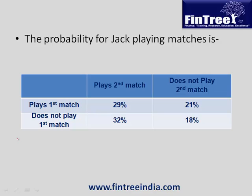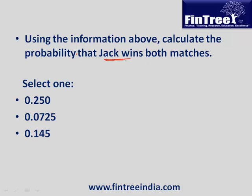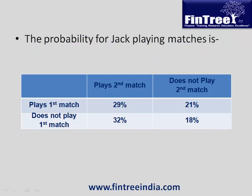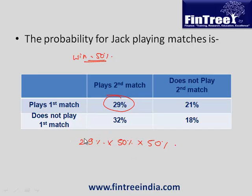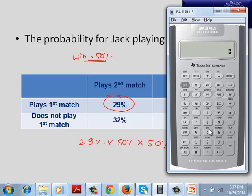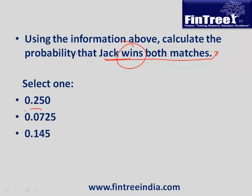The probability of Jack playing matches is given: plays first match, plays second match, does not play first match, does not play second match — a probability quadrant. We need to calculate the probability that Jack wins both matches. We assume probability of winning each match is 50%. To win both, Jack must first play both — probability of playing both is 29%. Then winning the first is 50% and winning the second is 50%. So 0.29 × 0.5 × 0.5 = 0.0725.